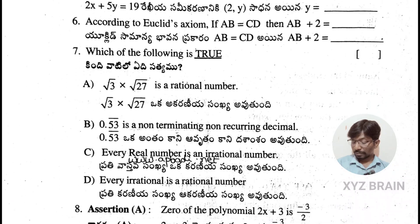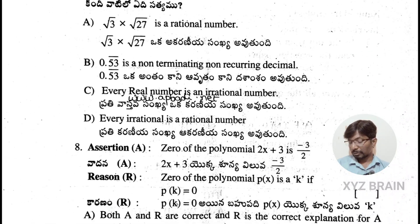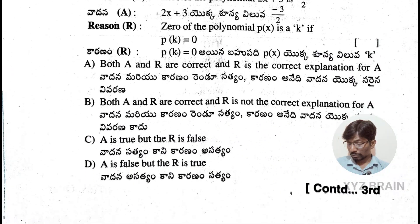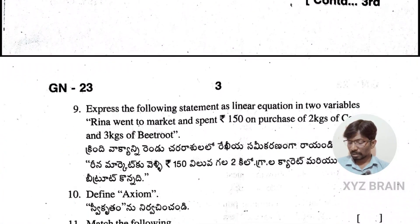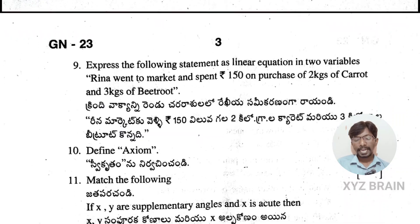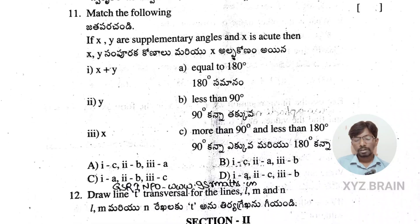Question 6: according to Euclid's axiom, if AB = CD, then AB + 2 = CD + 2 — which of the following is true? Questions 7-8 relate to identifying linear, quadratic, and cubic polynomials from a table. Questions 9 and 10: express the following statement as a linear equation in two variables — Reena went to market and spent ₹150 on purchase of items. Question 10 involves defining axiom. Question 11: match the following. Question 12: draw a transversal for lines l, m, and n.